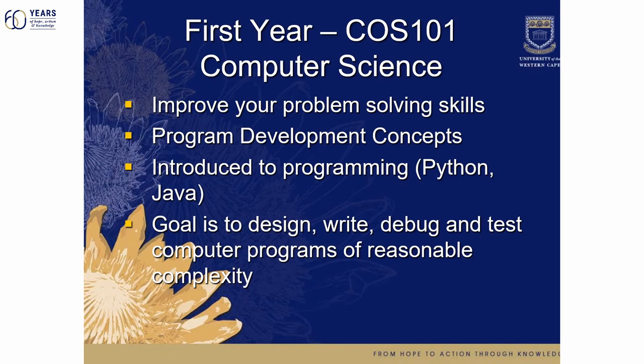So what is your typical first year computer science course, COS 101? In this first year course we improve your problem solving skills, because before you can solve a problem on a computer you must first have the ability to solve the problem. We cover various program development concepts and introduce you to Python and Java as our programming languages. The goal of the first year course is to design, write, debug, and test computer programs of reasonable complexity. That's your first year course summed up in a nutshell.